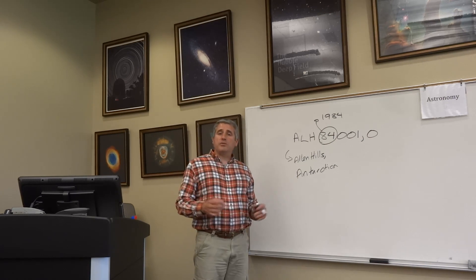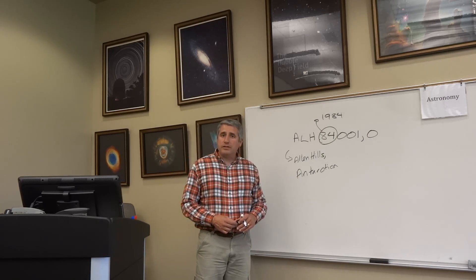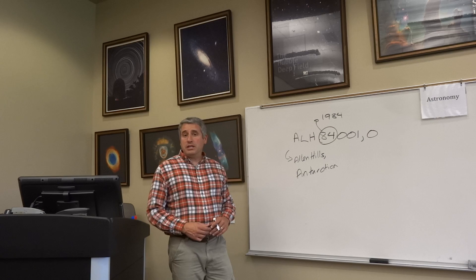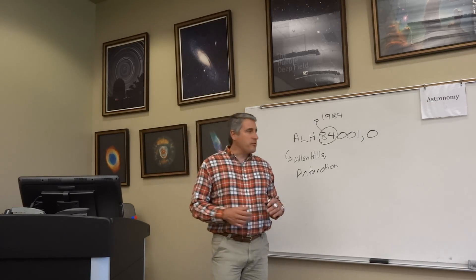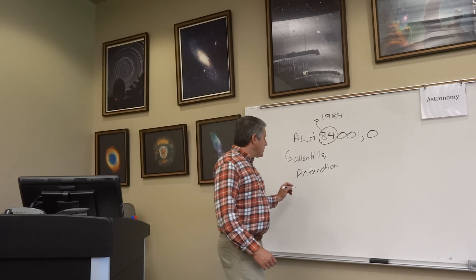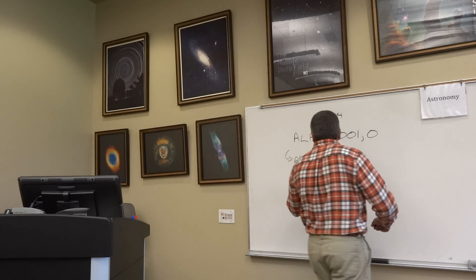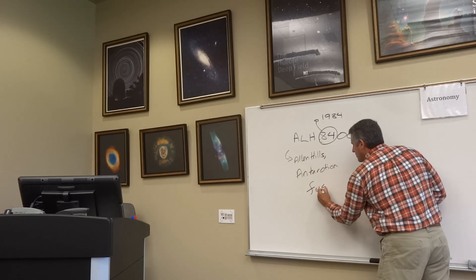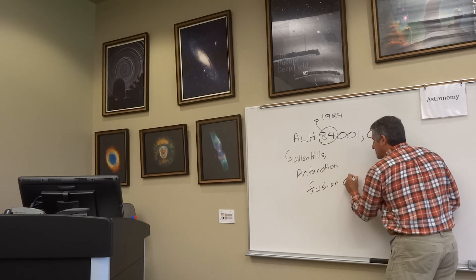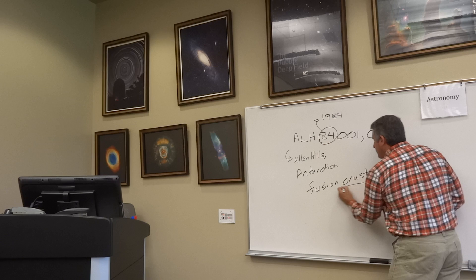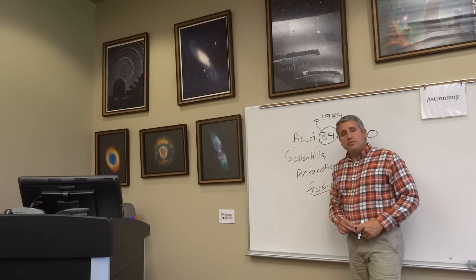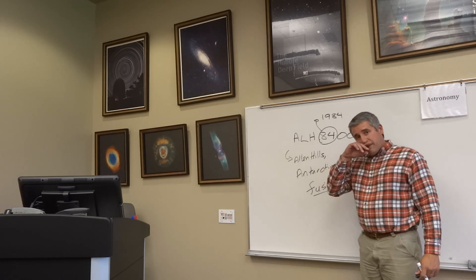The first question we talked about in class was: how do we know this thing is a meteorite? We recognized that there was a fusion crust — a blackened crust on the outside of the meteorite. That fusion crust told us it had passed through the Earth's atmosphere.